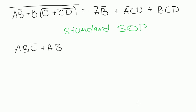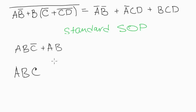It may sound a bit complicated, but it's super easy. We have three variables here: A, B, and C. In standard form, you need every term to contain all of these variables. This first term, ABC̄, is done — it has all the variables. But the second term, AB, doesn't have C in it. There is no C there.